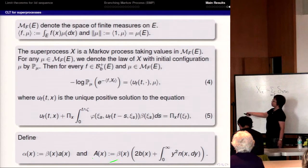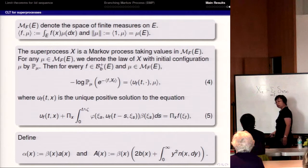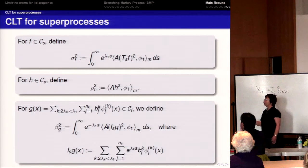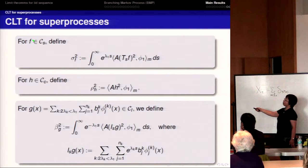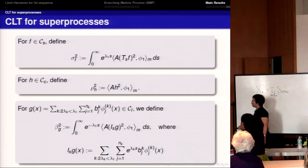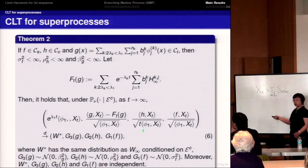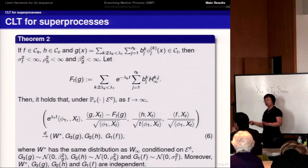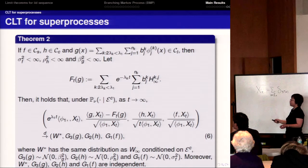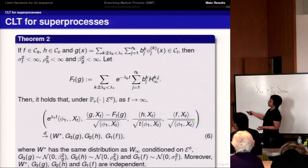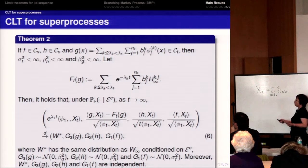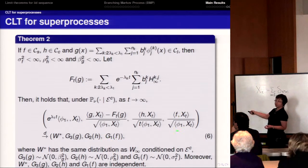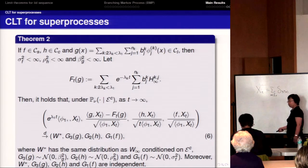We similarly define alpha(x) and A(x), assumed to be bounded in E. We then get a very similar result. For each test function f belonging to different classes, we define different constants as before. The result is very similar; the only difference is the covariance — its definition is slightly different, but the limit is exactly as before. We give the CLT for supercritical superprocesses under similar conditions.